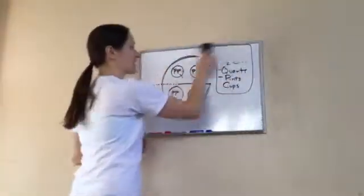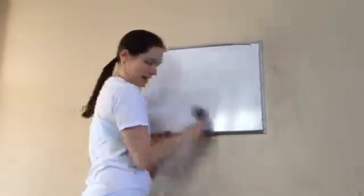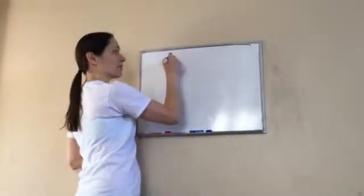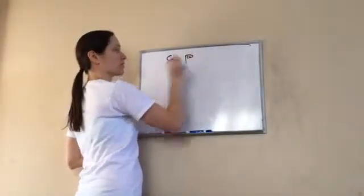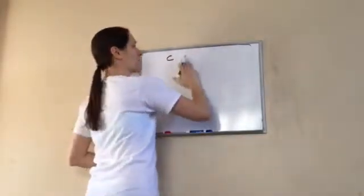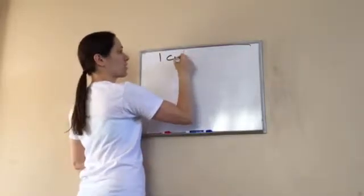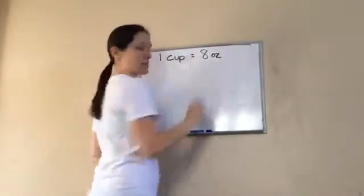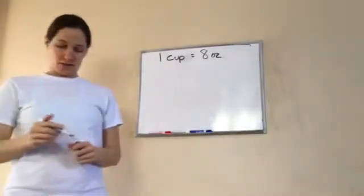Now, there are some other things that I want you to write down other than that. And that one cup that was inside the P, the two little things. One cup, and I want you to write down this measurement. One cup equals eight ounces. Eight ounces.